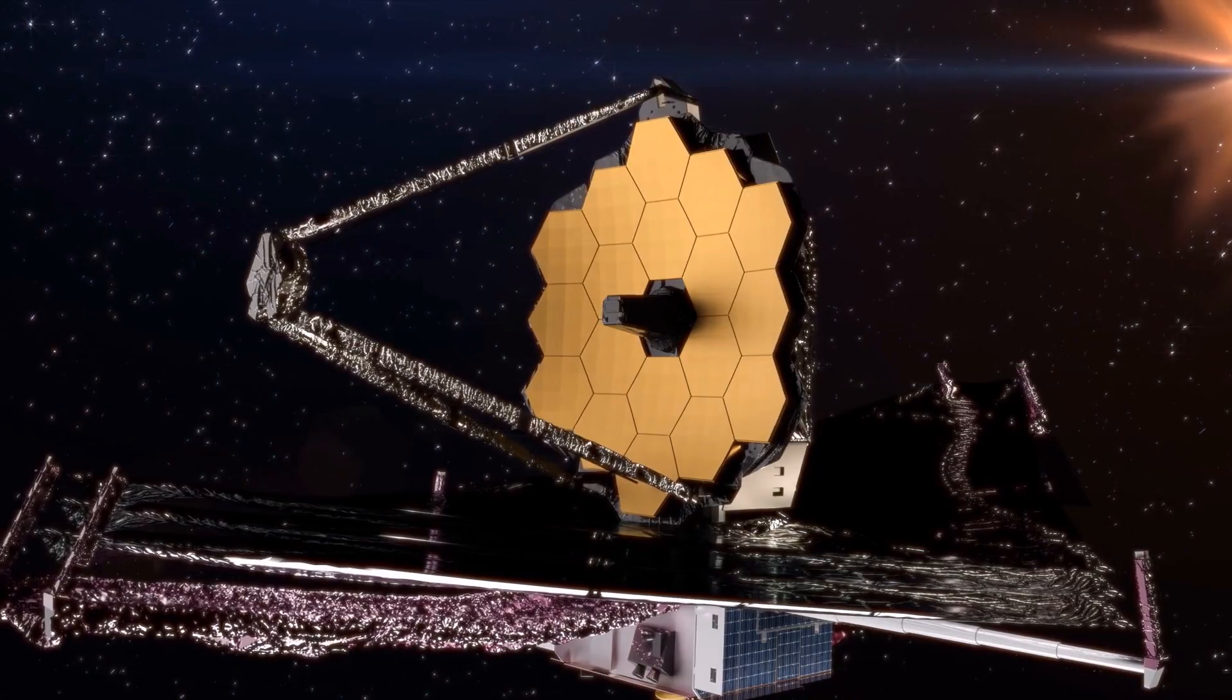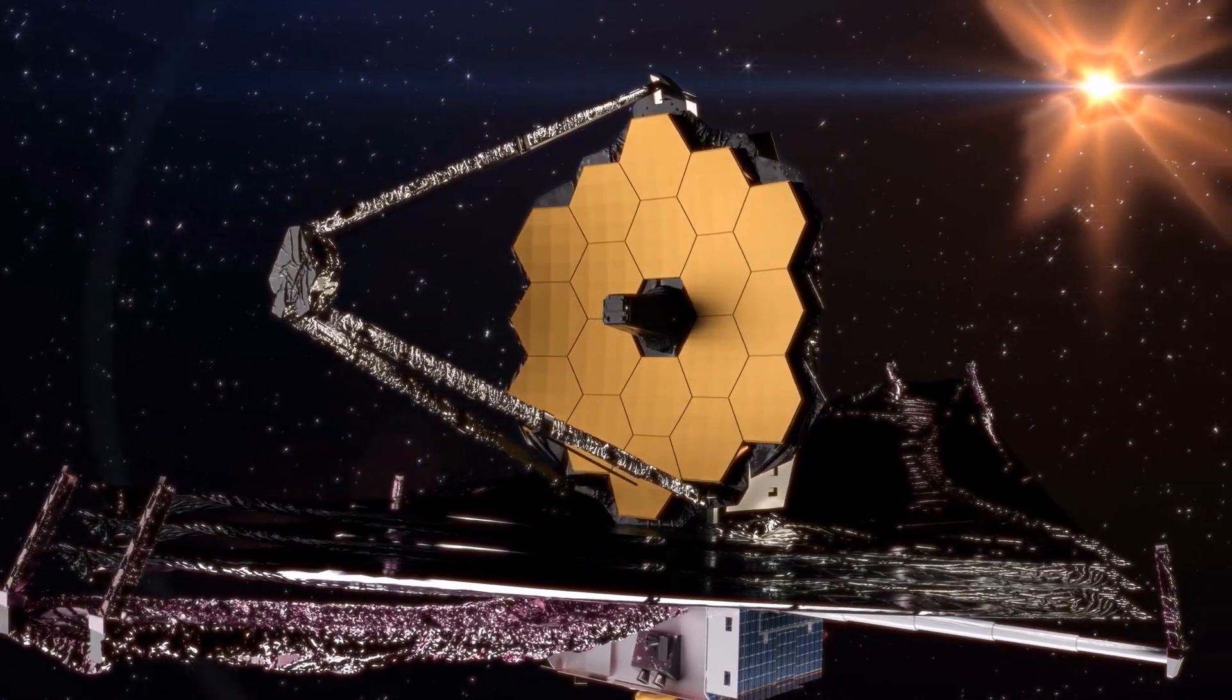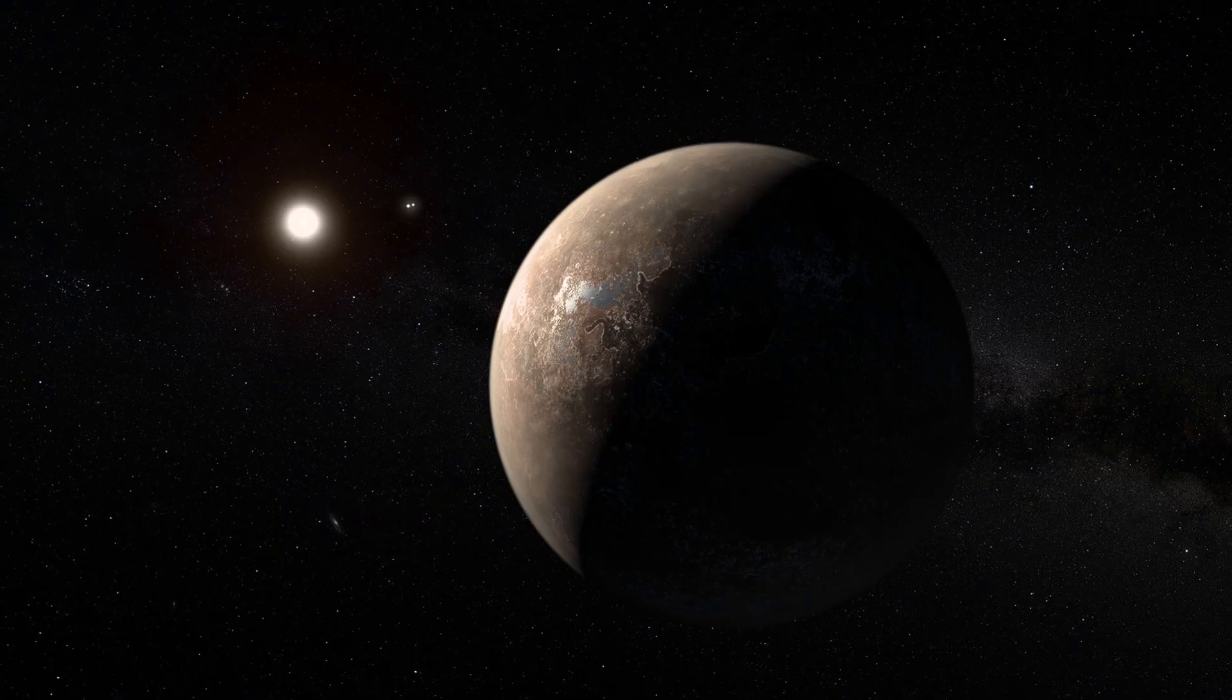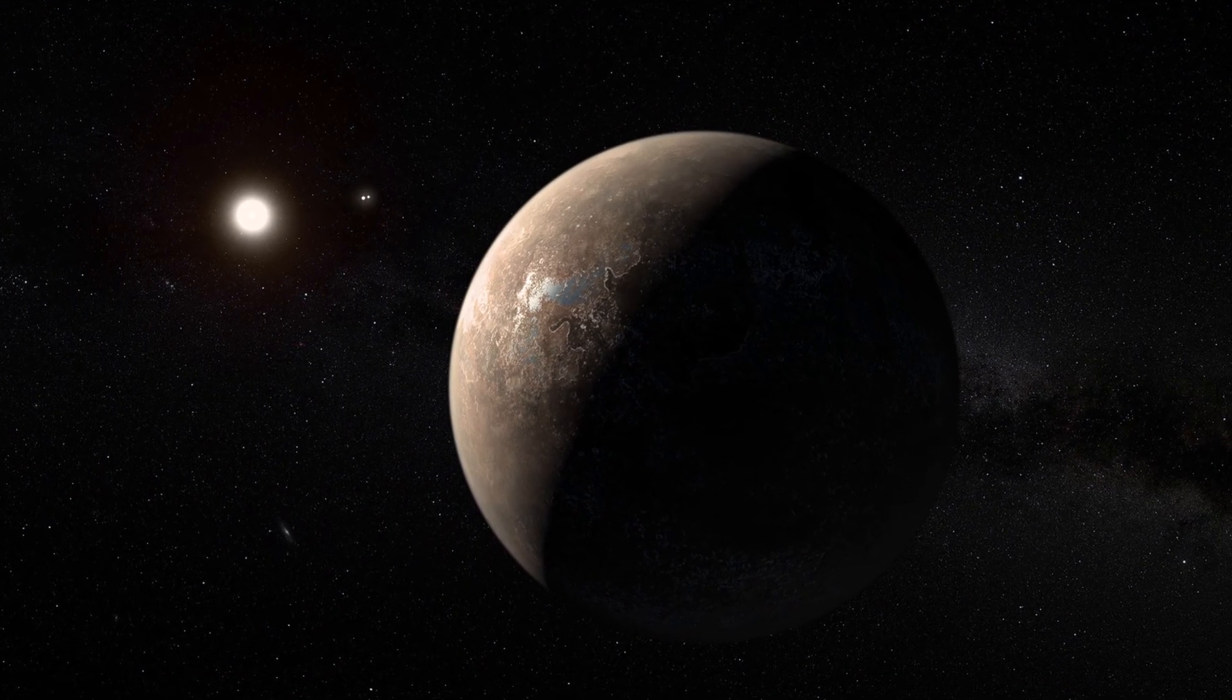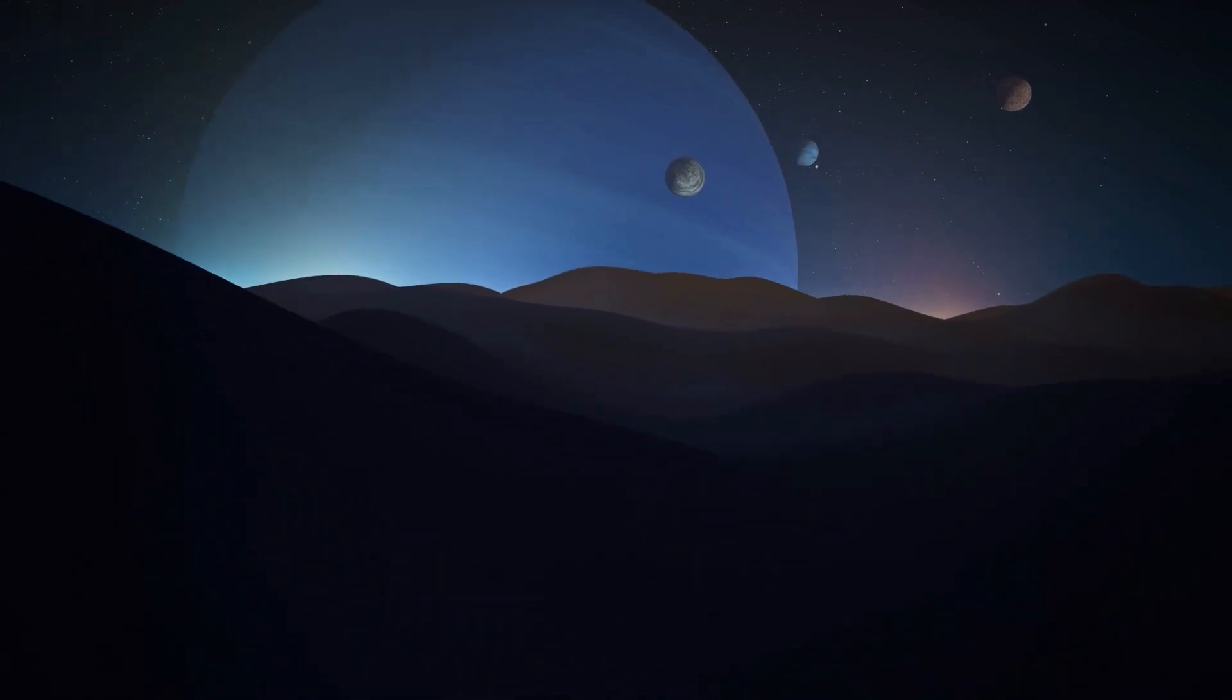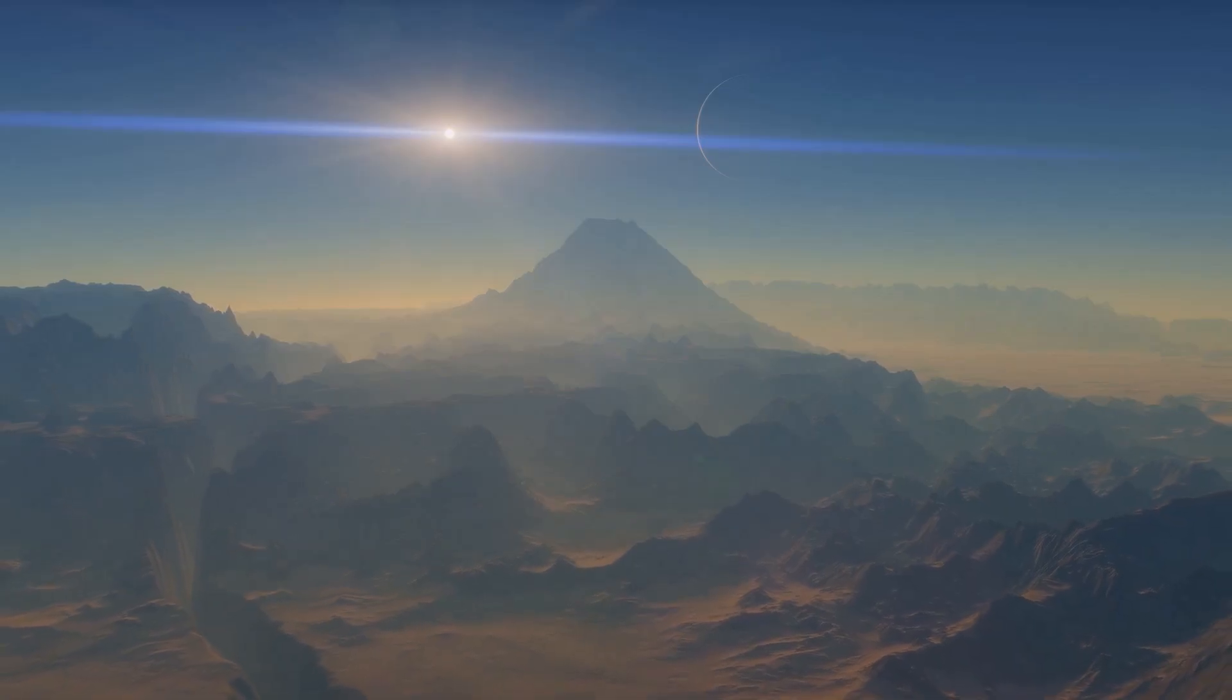Launched in 2021, the James Webb Space Telescope now floats 1.5 million kilometers from Earth, balanced in the delicate gravitational pocket called the second Lagrange point, out there, beyond the pull of our planet's heat and noise. It operates in silence, so deep that even starlight arrives as a whisper.